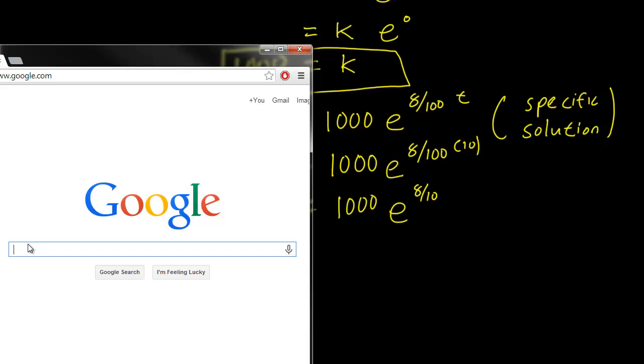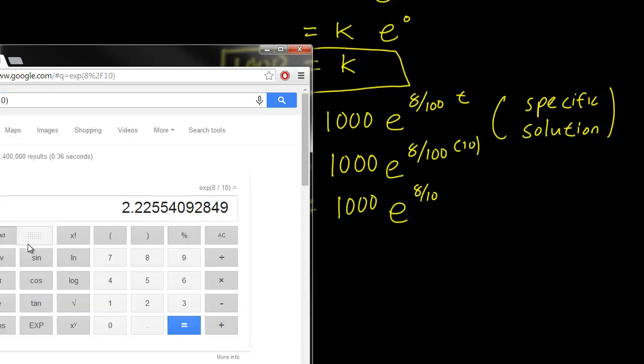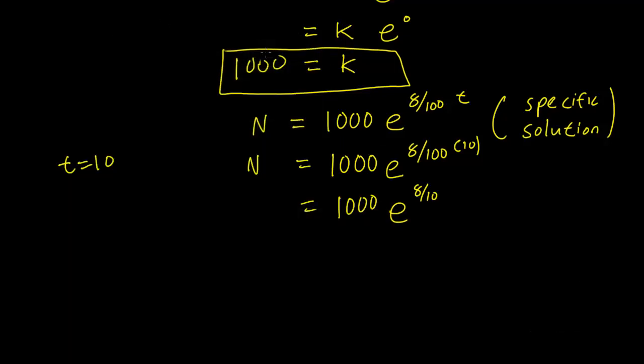The exponential of 8 over 10 is going to be 2.2225, and this means that this is going to be equal to 2.2225.